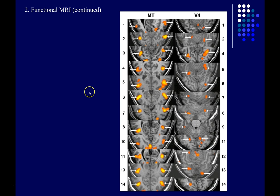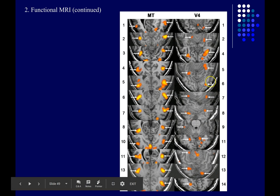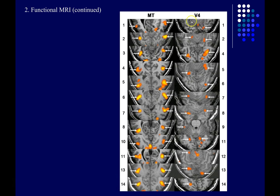Unfortunately, the areas of the brain active between two conditions can vary pretty dramatically from one person to another. This is showing two functionally defined areas from data I collected for my dissertation. Area MT — the motion-selective area — has a pretty consistent location across subjects. But area V4, which is color-sensitive and localized by showing colored versus black-and-white images, varies dramatically from one subject to the next — some don't even have it on one side of the brain. This makes group-level statistics difficult, because averaging across individuals causes you to lose understanding of individual differences in functional anatomy.